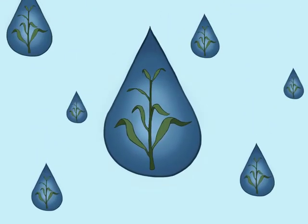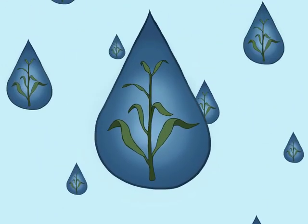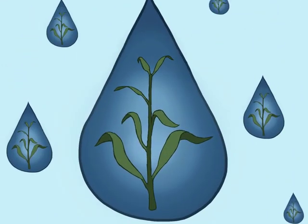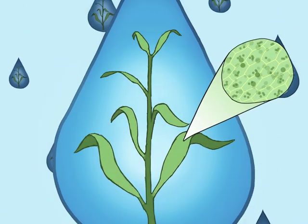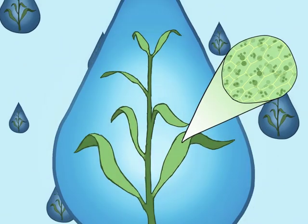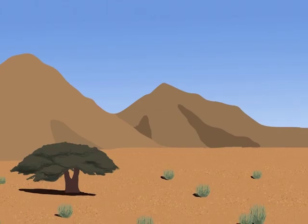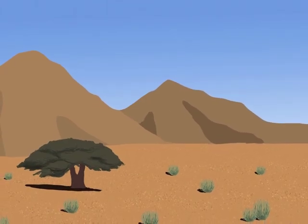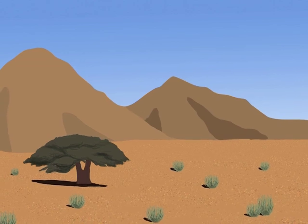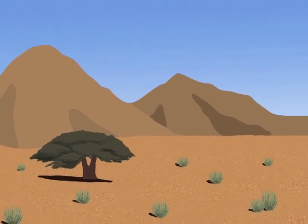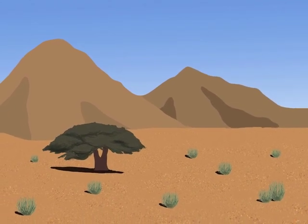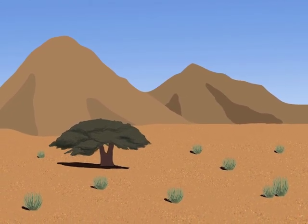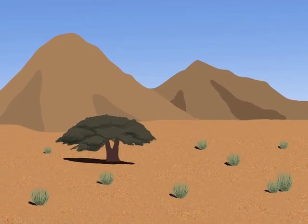Water is an essential resource for plants, used for maintaining their structure and carrying out cellular activities. Water scarcity has led many plants to evolve special adaptations for coping with droughts and arid environments.